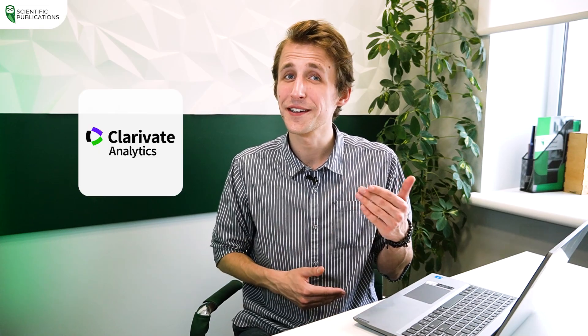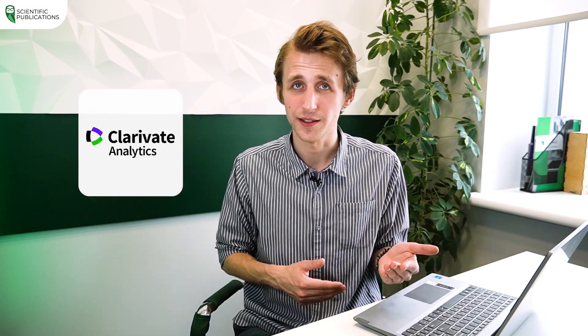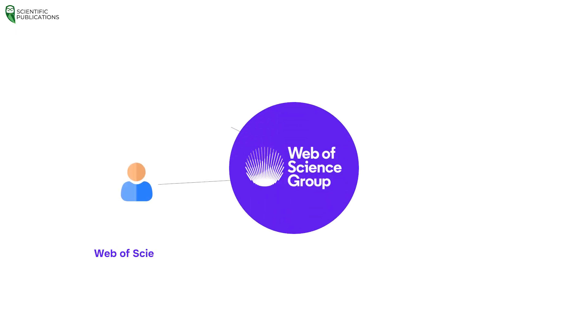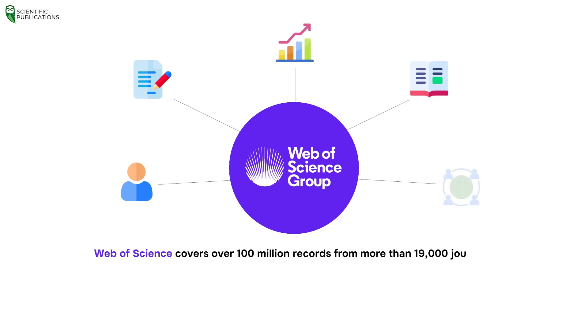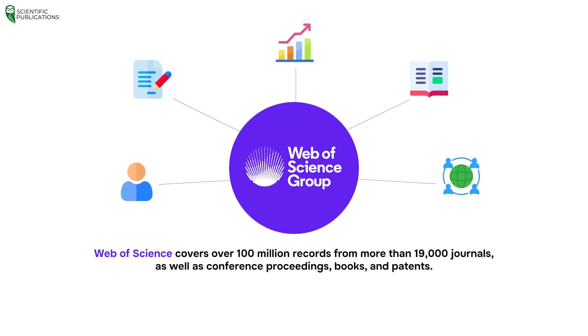Web of Science, on the other hand, is developed by Clarivate Analytics. It covers over 100 million records from more than 19,000 journals, as well as conference proceedings, books and patents.